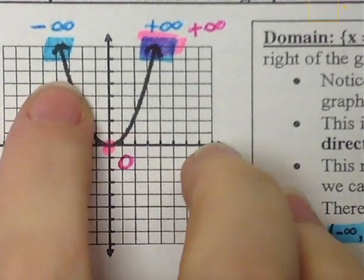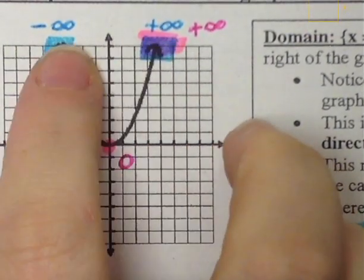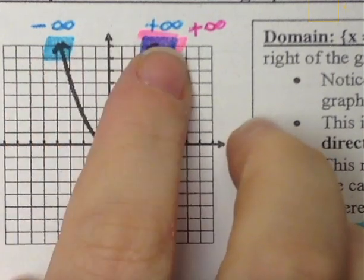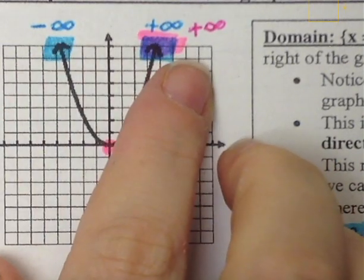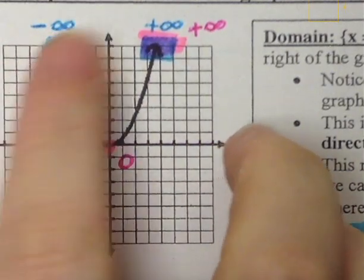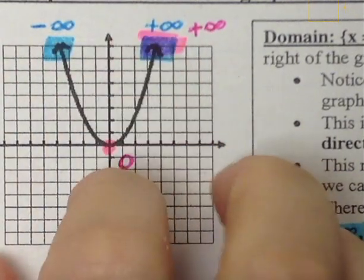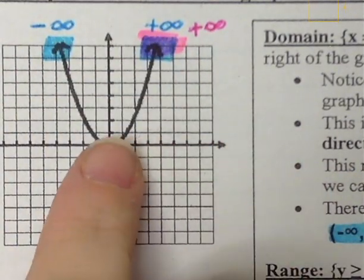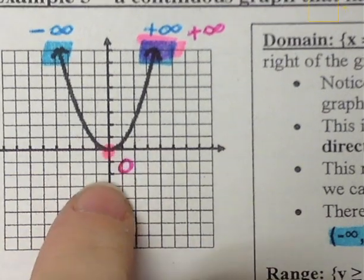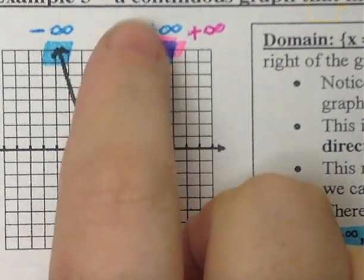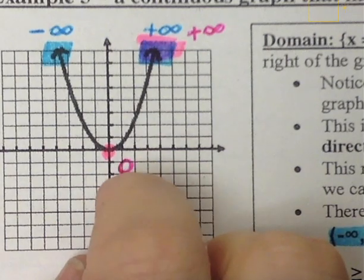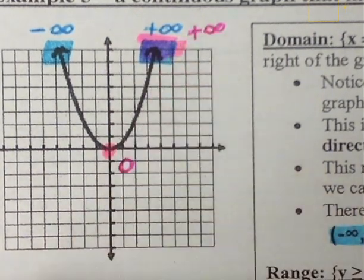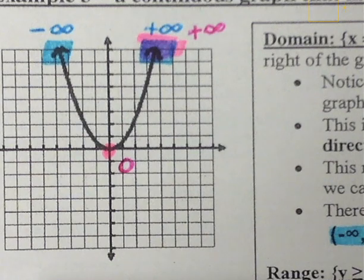So again, I'm using my blue to help me know which one goes for my domain. I highlight my leftmost point and my rightmost point, and I find the x values of those. Then for the range, I highlight my lowest point on the graph and then my highest point on the graph, and I write out the y values of those points. Then I can find my interval notation.